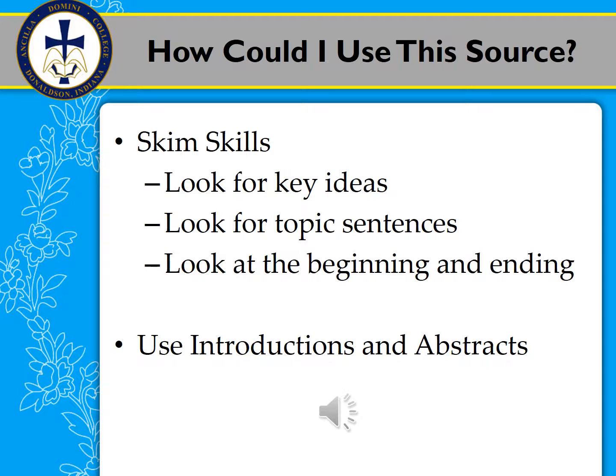So you're looking through the source, and you're going to need to improve your skimming skills. That means you're looking through something very quickly — not reading through every single piece of information. When you find resources, you're skimming through looking for key ideas and looking for topic sentences. By topic sentences, we mean the sentence in the paragraph that basically tells your readers what the paragraph's main point is going to be.